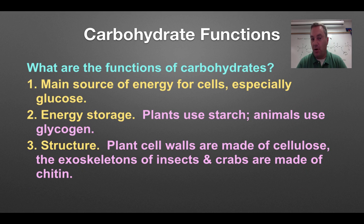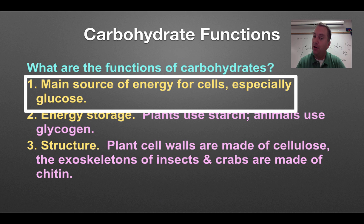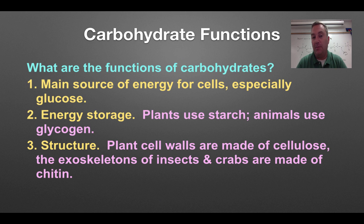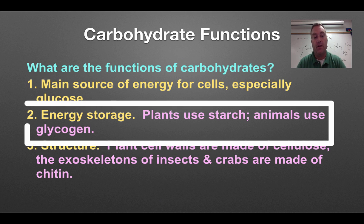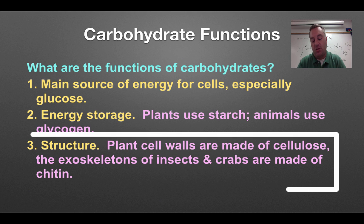The functions of carbohydrates are three, but very important. Number one, carbohydrates are the primary source of energy for cells — this is what glucose is for. Your cells will take glucose and use it to make ATP. They're also part of energy storage, especially in plants, where they store excess energy in the form of starch. Animals like our cells store energy in the form of glycogen, also known as animal starch. Structure of some organisms is also comprised mainly of carbohydrates — specifically plant cell walls are made out of cellulose. And insects and crabs have an exoskeleton made out of a carbohydrate called chitin.